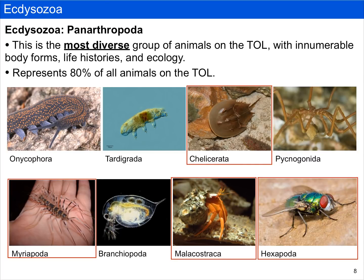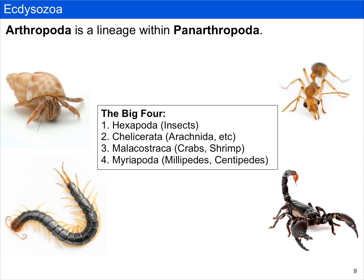Focusing more closely on the phylogeny, let's now discuss Panarthropoda. This is a hugely diverse group, occupying at least 80% of all animals on the tree of life, with innumerable body forms, life histories, and ecologies. We focus our efforts on just four groups: the myriapods, the chelicerates, the malacostracans, and the hexapods. Recall that Arthropoda is a lineage within Panarthropoda — essentially we're eliminating onycophorans and tardigrades. Some call that Euarthropoda, but we'll call it Arthropoda.